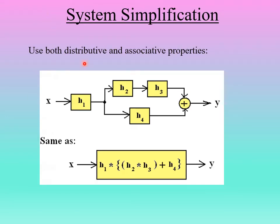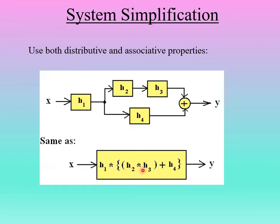Here's the solution. This is similar to simplifying resistor circuits. Starting inside: h2 and h3 are in series, so we combine them to get h2 convolution h3. That combined h2-h3 is in parallel with h4, so we add h4, giving h2 convolution h3 plus h4. All of this is in series with h1, so we take the convolution: h1 convolution, in brackets, h2 convolution h3 plus h4. This is the overall simplification — all four subsystems combined into a single system with this impulse response.